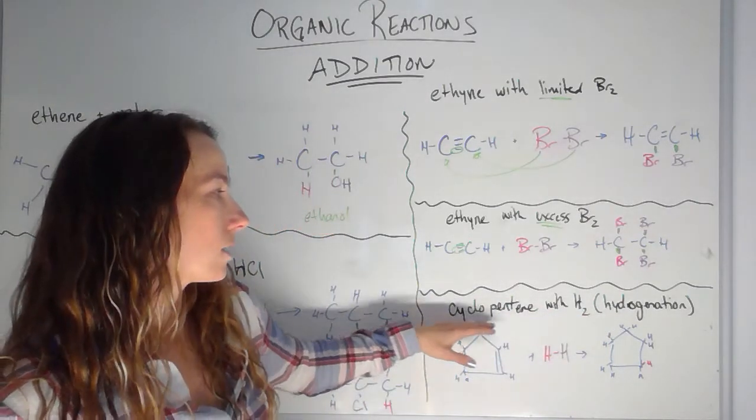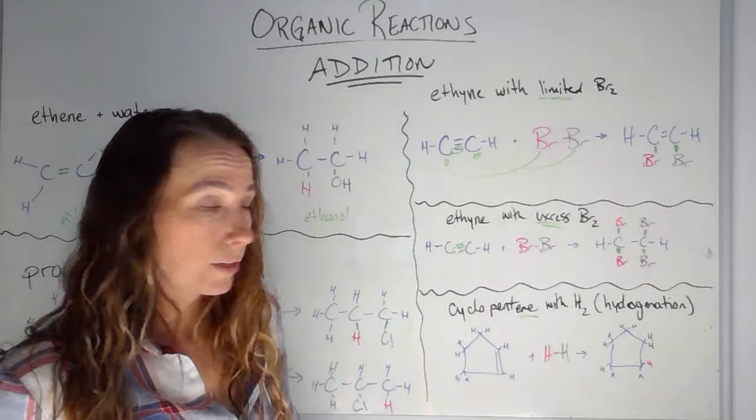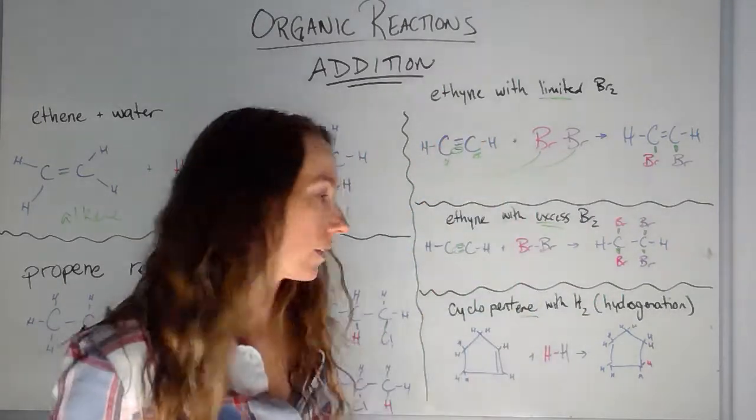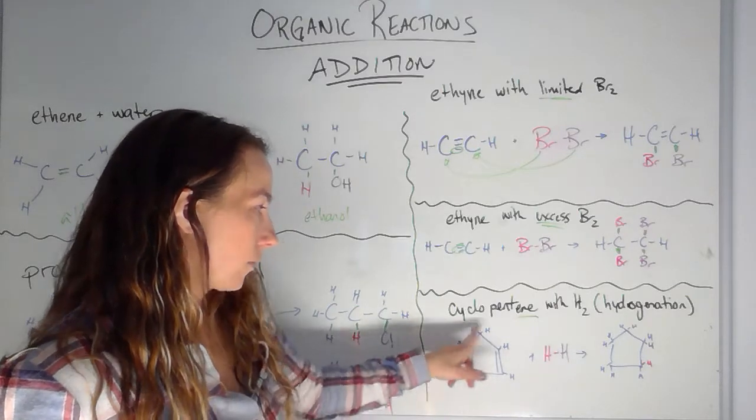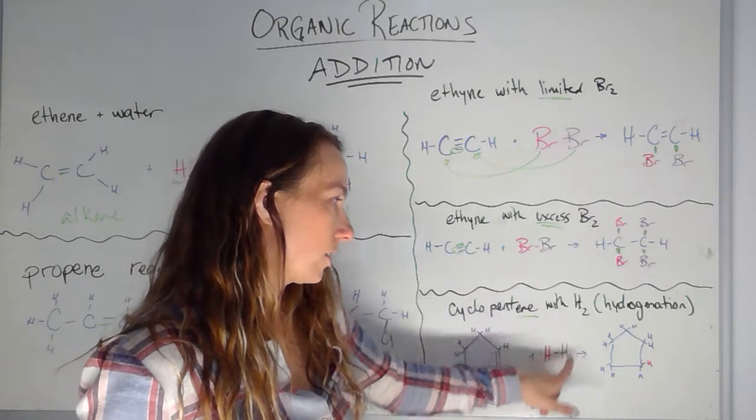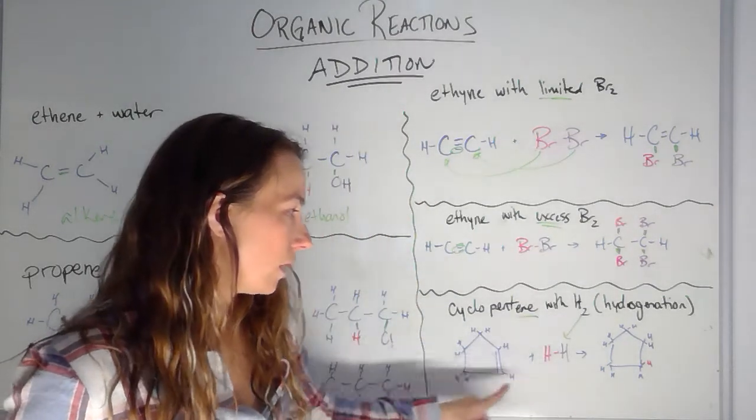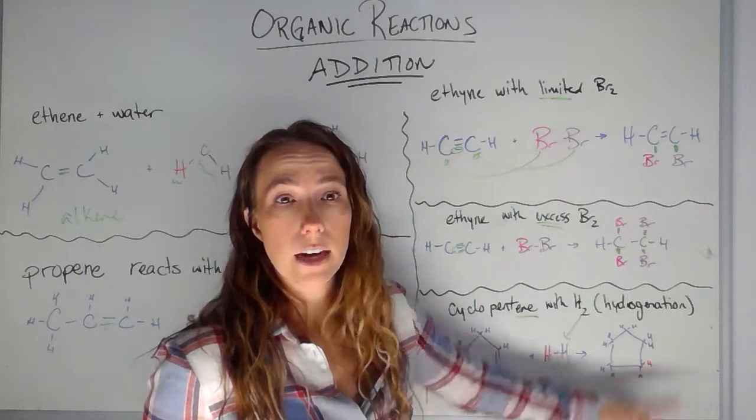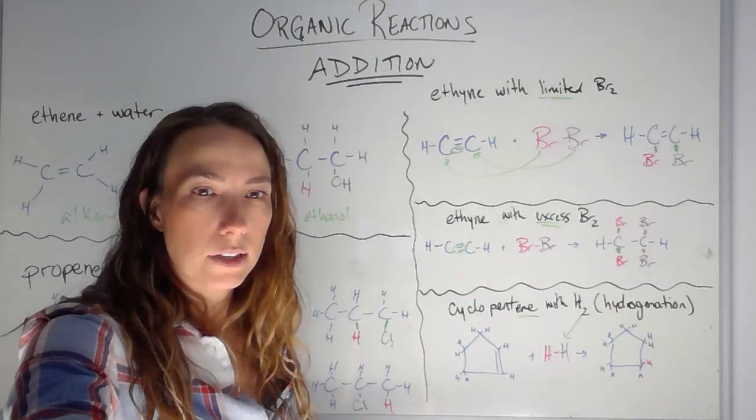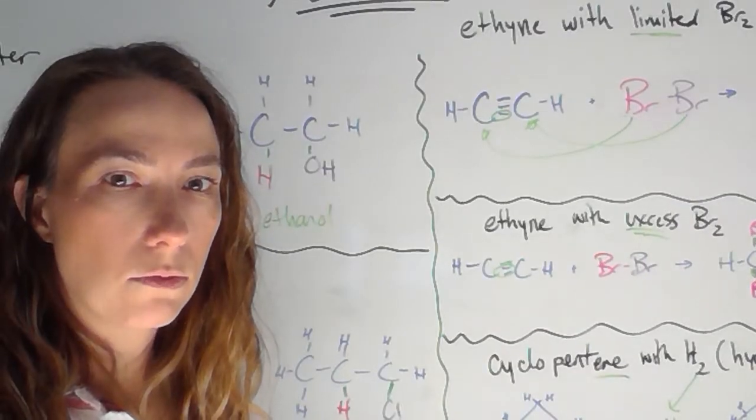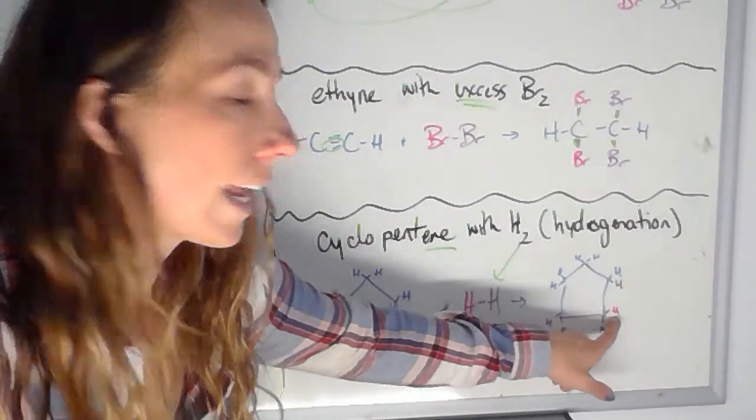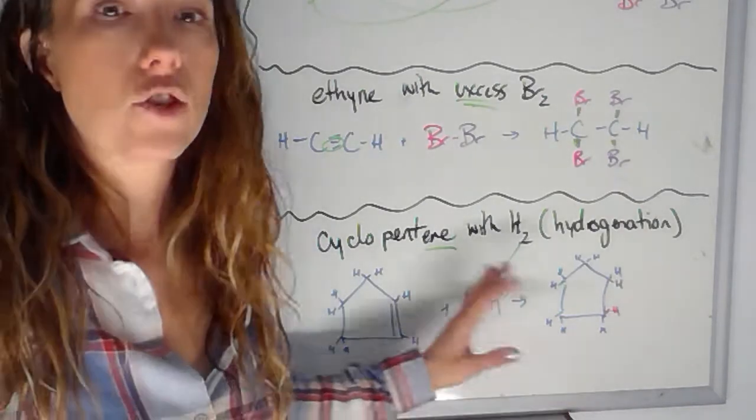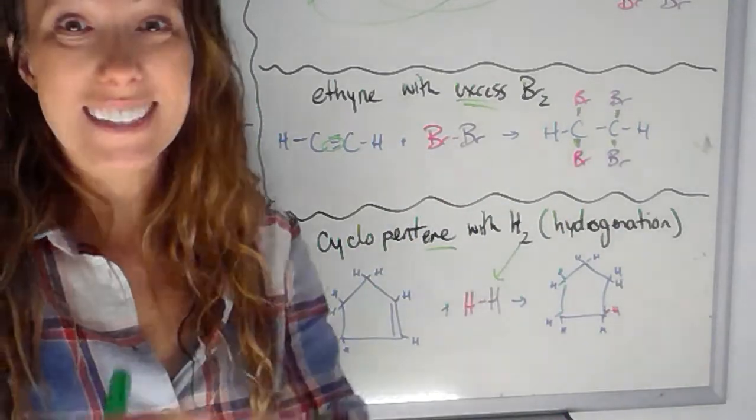So I'm going to take a cyclopentene. So it is unsaturated because I have a double bond. And I'm going to add hydrogen to it. So again, open up that double bond, grab an H, grab an H in this case. So here's my cyclopentene. All these hydrogens already belong there. And then I have this extra H2 that I'm adding. So that double bond breaks, there's the double bond breaking. And I ended up with one H on one side of that double bond and the other H on the other side of that double bond. And so I have gone from cyclopentene to cyclopentane. So I've become a more saturated compound.